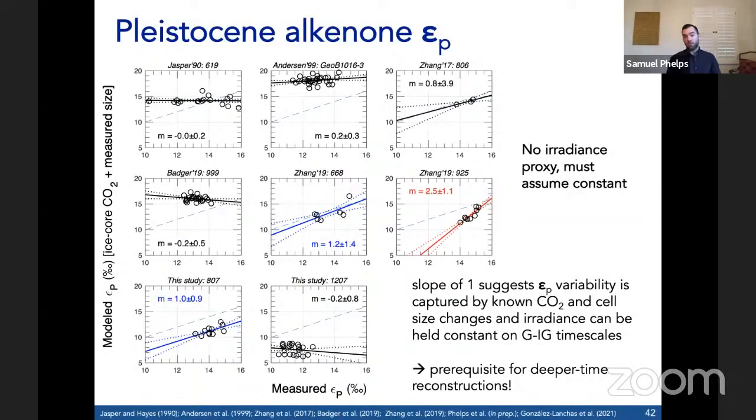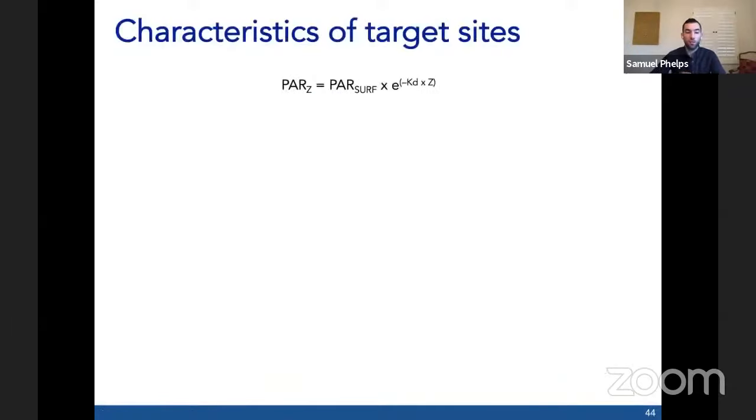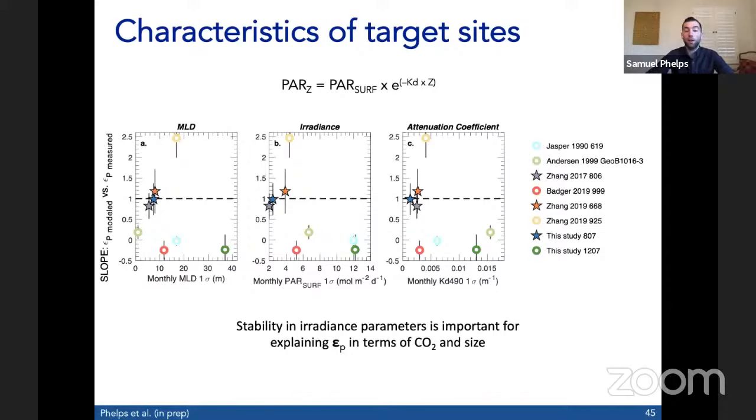Of course, irradiance does not have to be stable on multimillion-year timescales, but we view it as a prerequisite for attempting to reconstruct CO2 change. This is the study I just mentioned by Alba Gonzalez-Launches who worked at ODP 925 over MIS 12 to 9 and found that the culture-based model, a slightly different version, can also model EP changes well from the ice core CO2 variations. We're finding agreement with this updated approach. What is it about locations that appear to behave well? The irradiance at depth is a function of the irradiance of the surface, the attenuation coefficient, and the depth of production.